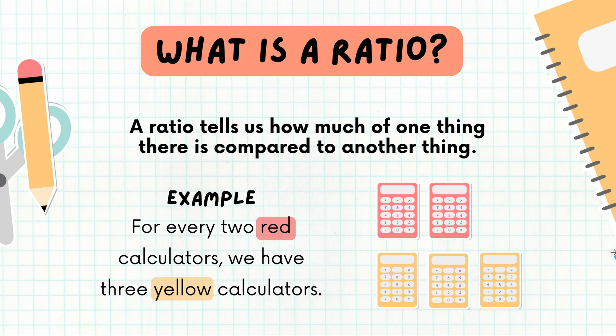If you take a look down at the bottom, I see an example of two red calculators to three yellow calculators. If you look at how the wording is used over here, you can see for every two red calculators we have three yellow calculators. That's the way we write our ratio sentences.